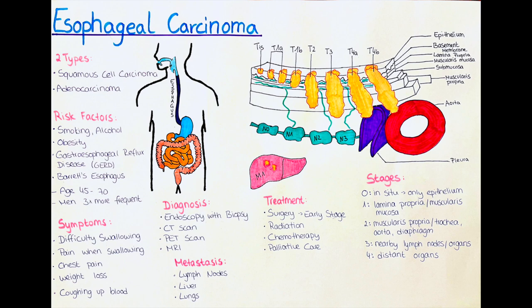Adenocarcinoma of the esophagus is a type of cancer that starts in the glandular cells of the inner lining of the esophagus. It is the most common type of esophageal cancer in western countries, accounting for about 50-60% of cases. Adenocarcinoma typically develops in the lower part of the esophagus near the stomach.